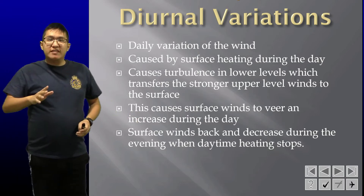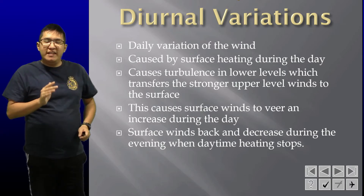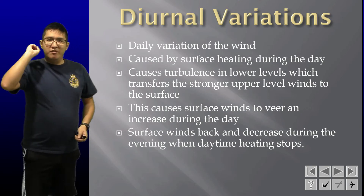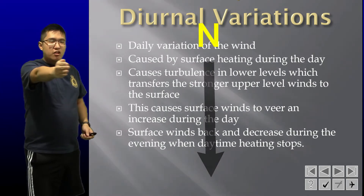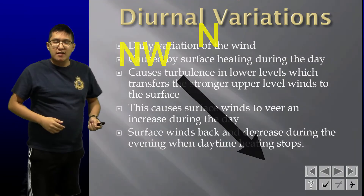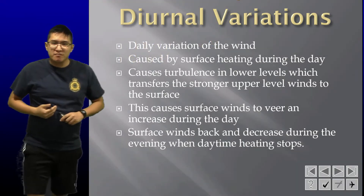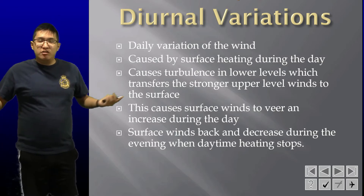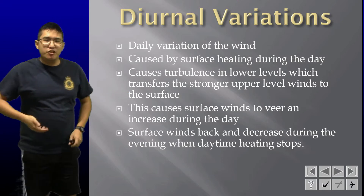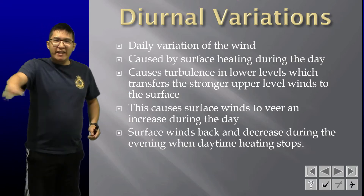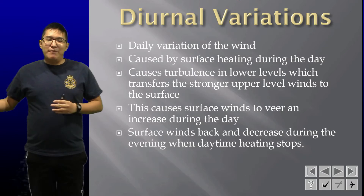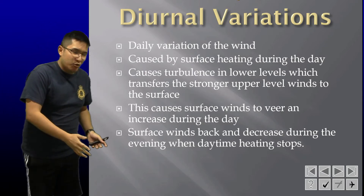Winds tend to back and decrease during the evening when daytime heating stops. Backing is the opposite of veering — a counterclockwise change in direction. So if winds are coming from north and they start to back, they will be coming more from the northwest. They also decrease in strength. The way I like to remember this: think of the wind as a being. During the day it's awake, veering and increasing because it has a lot of energy. But as the day goes on it gets tired, and by nighttime it will back and decrease.